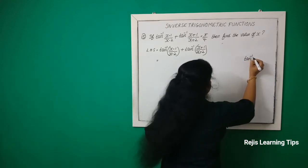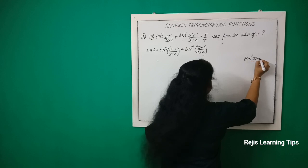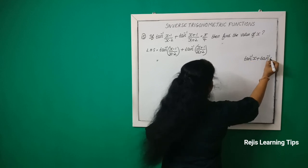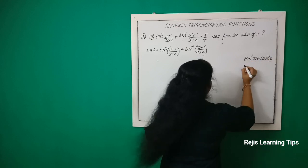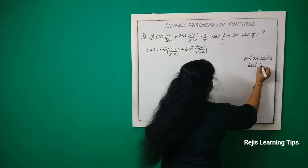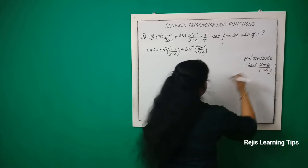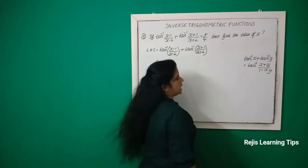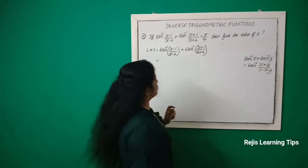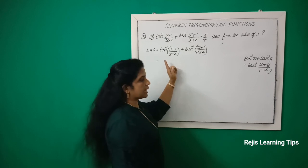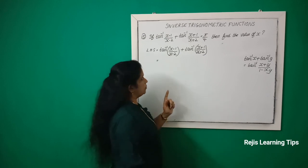We apply the formula: tan⁻¹x + tan⁻¹y = tan⁻¹((x+y)/(1−xy)). So we set x = (x−1)/(x−2) and y = (x+1)/(x+2) and use this formula.